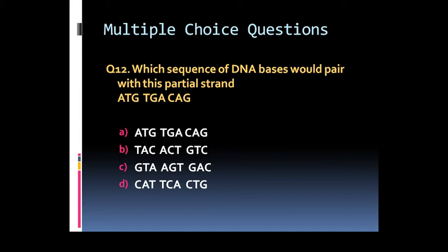Option A: ATG, TGA, CAG. Option B: TAC, ACT, GTC. Option C: GTA, AGT, GAC. Or option D: CAT, TCA, CTG.